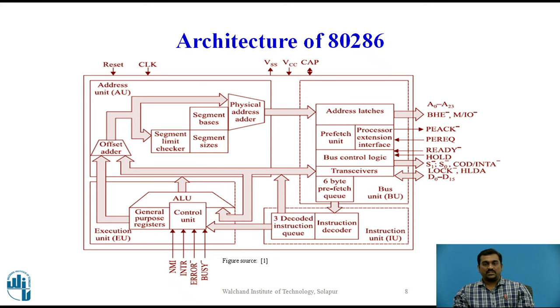The diagram shows the architectural block diagram of 80286 microprocessor. As mentioned earlier the architecture of 80286 microprocessor has got 4 separate processing units namely address unit, bus unit, instruction unit and execution unit.